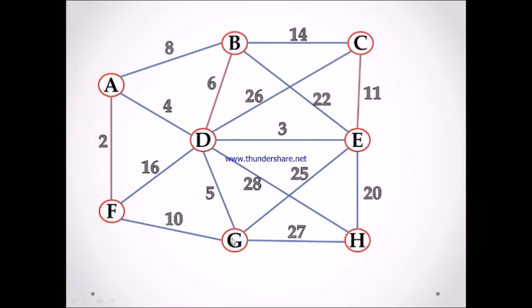Node G. C to F, we have 10. C to D, 5. C to A, we have 25. C to H, we have 27. So, the cheapest minimum edge value is 5.